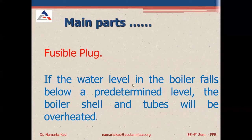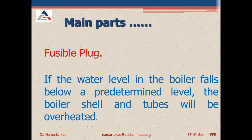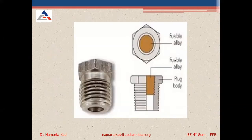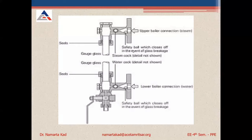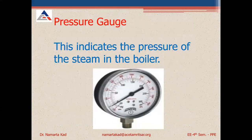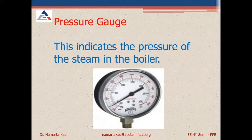Now let's look at different boiler components and how they appear. The fusible plug — also present in the Cochran boiler — prevents overheating if the water level falls below a predetermined level. The water level indicator shows the water level in the boiler. The pressure gauge is an analog meter-type instrument with a needle that indicates steam pressure inside the boiler in bars.